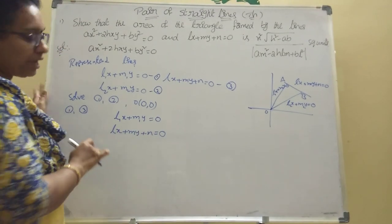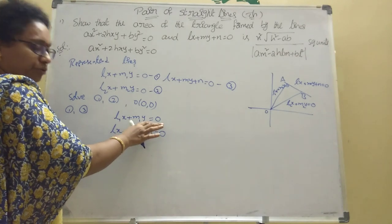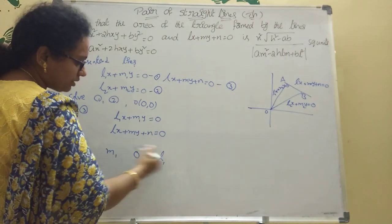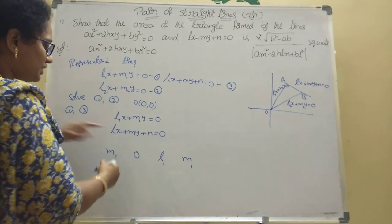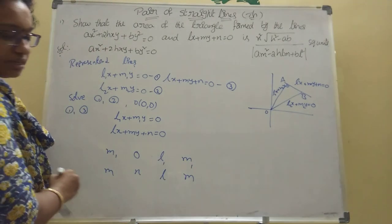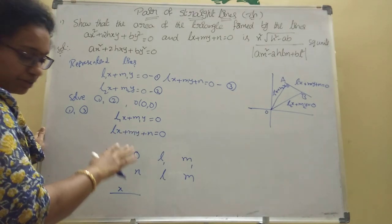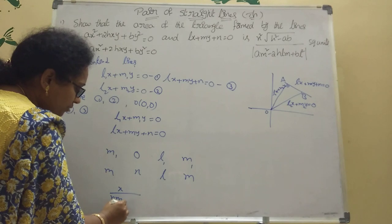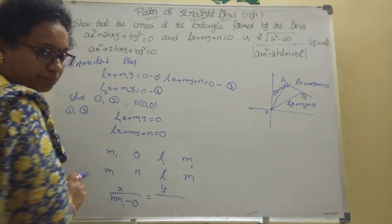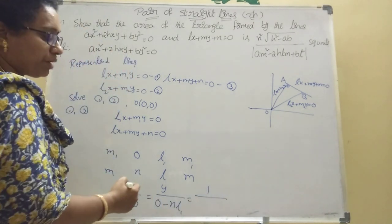This is the third line — first and third intersection. Using the YCX model: Y-coefficient first, then constant. So write M₁, 0 then X-coefficient L₁, M₁. Next row: M, N then L, M. Finding X by cross-multiplication: X = (M₁·N - 0·M) / (L₁·M - L·M₁), which gives X = NM₁ / (L₁M - LM₁). Then Y = (0·L - N·L₁) / (L₁M - LM₁), which gives Y = -NL₁ / (L₁M - LM₁).